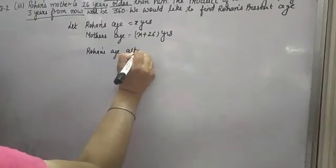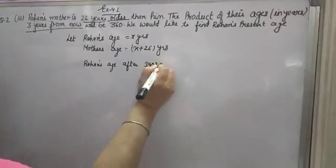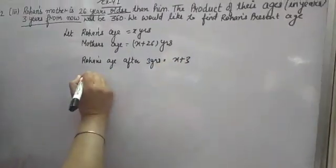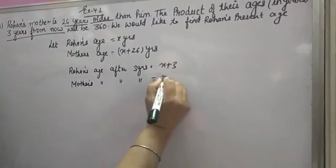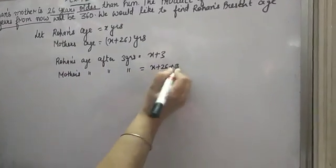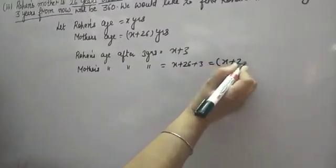After 3 years, what will it be? X plus 3. And his mother's age will be? After 3 years, X plus 26 plus 3, means X plus 29.